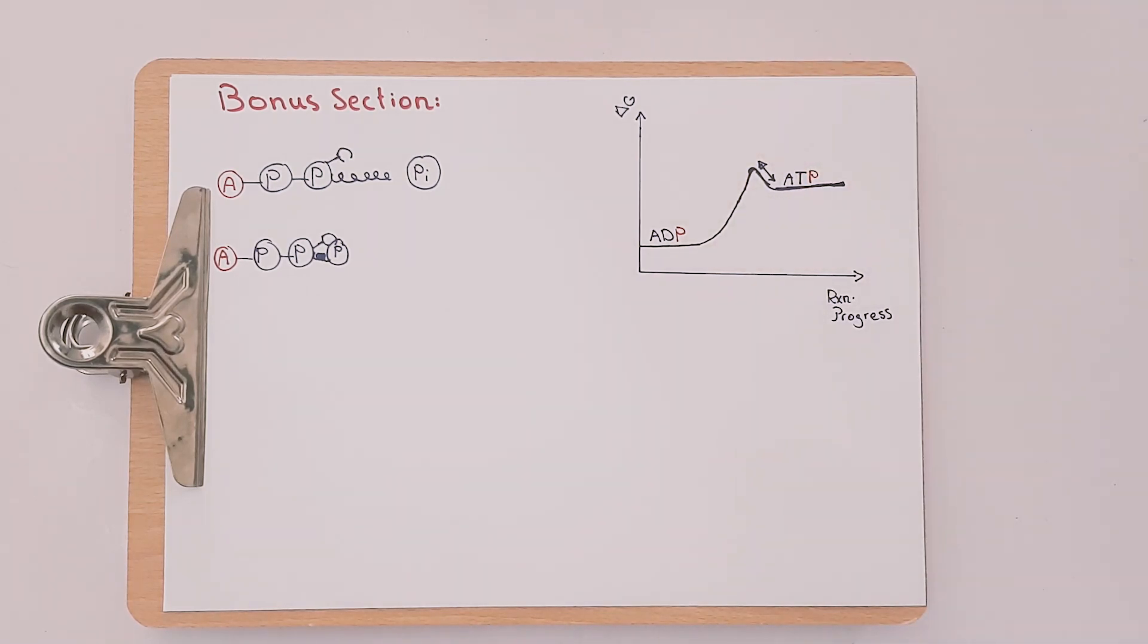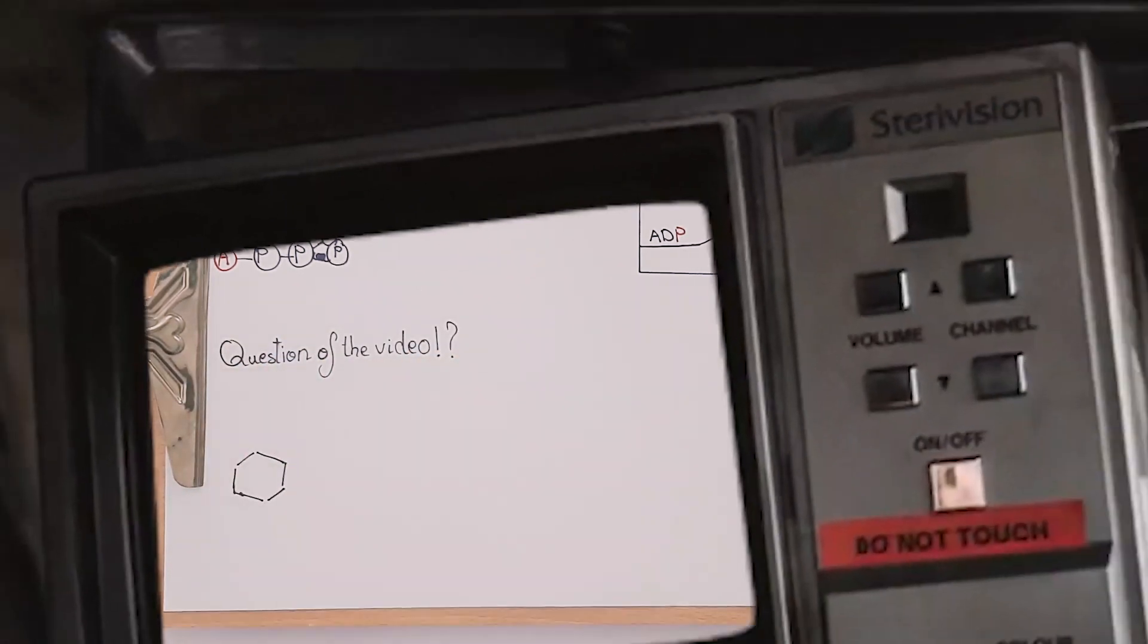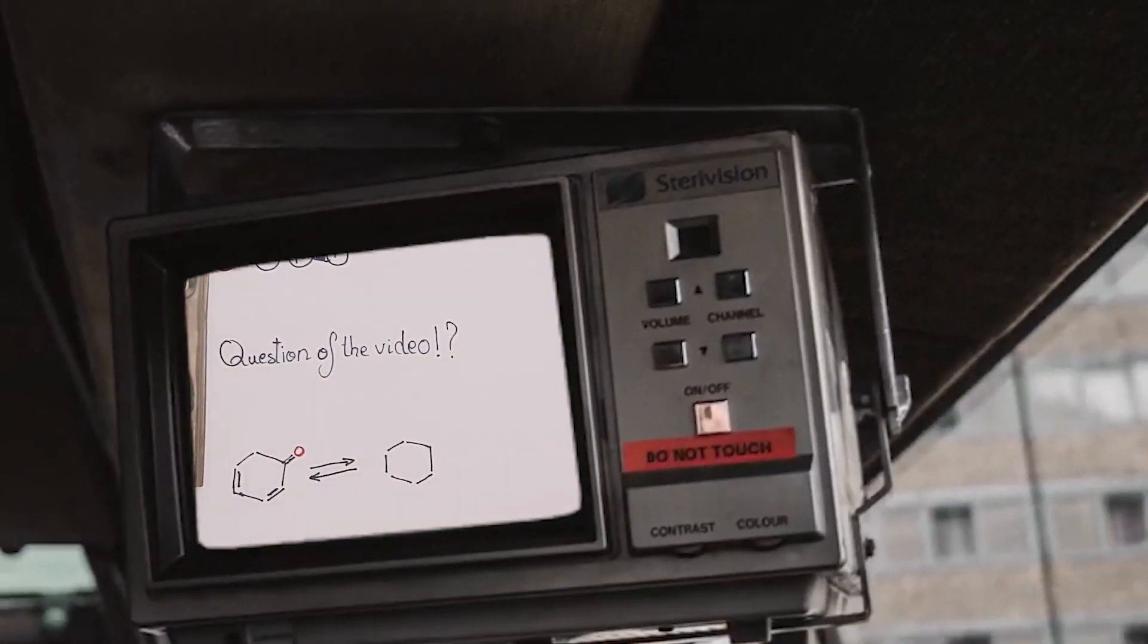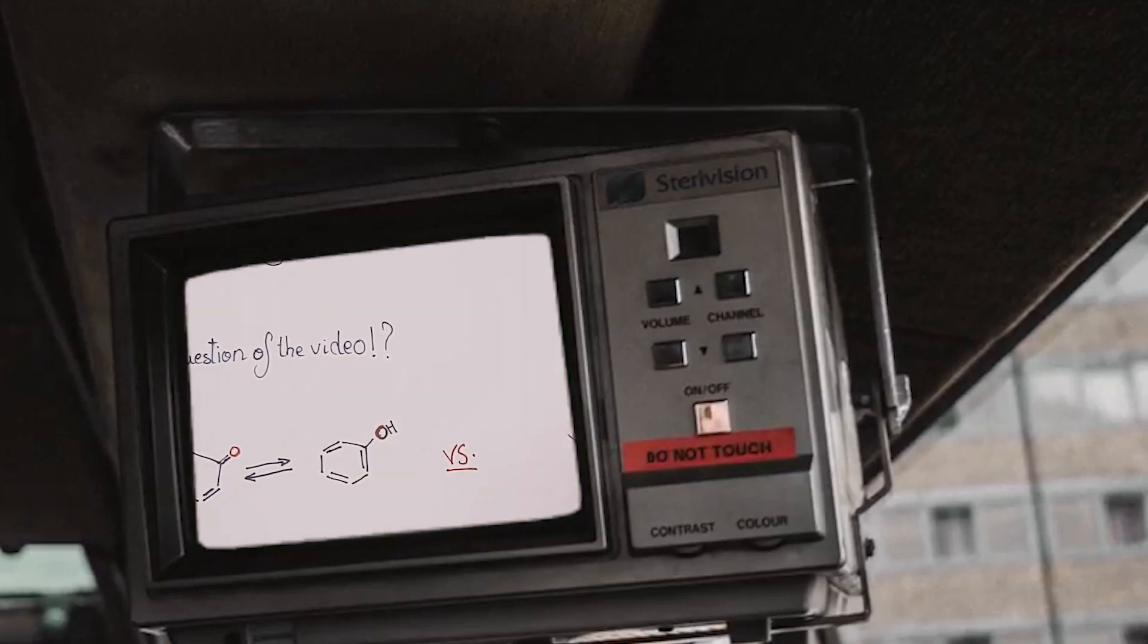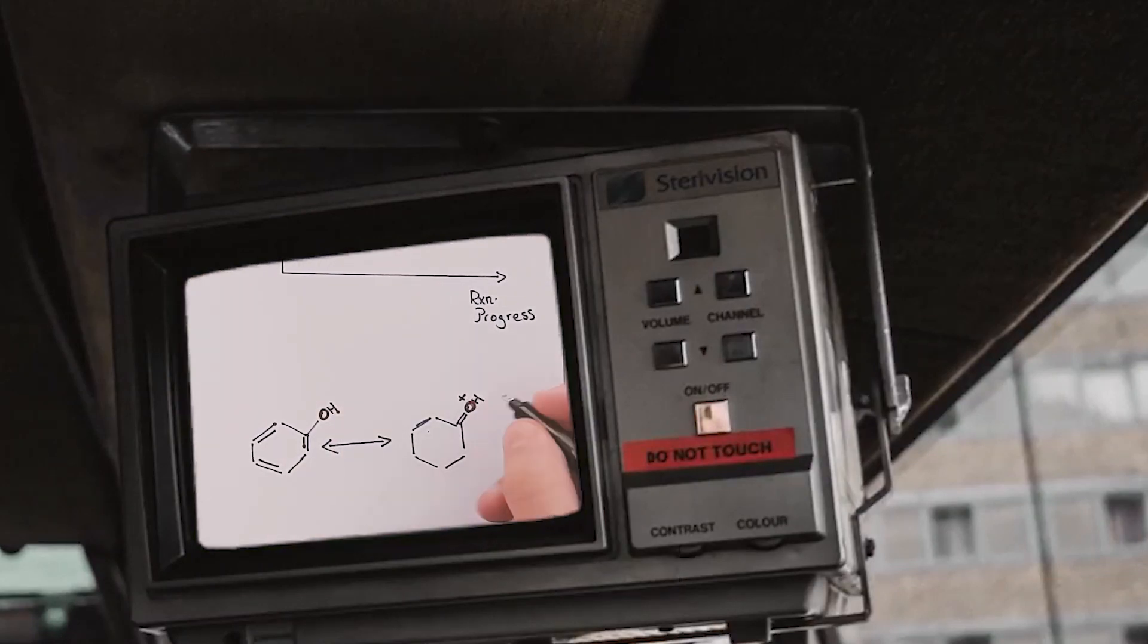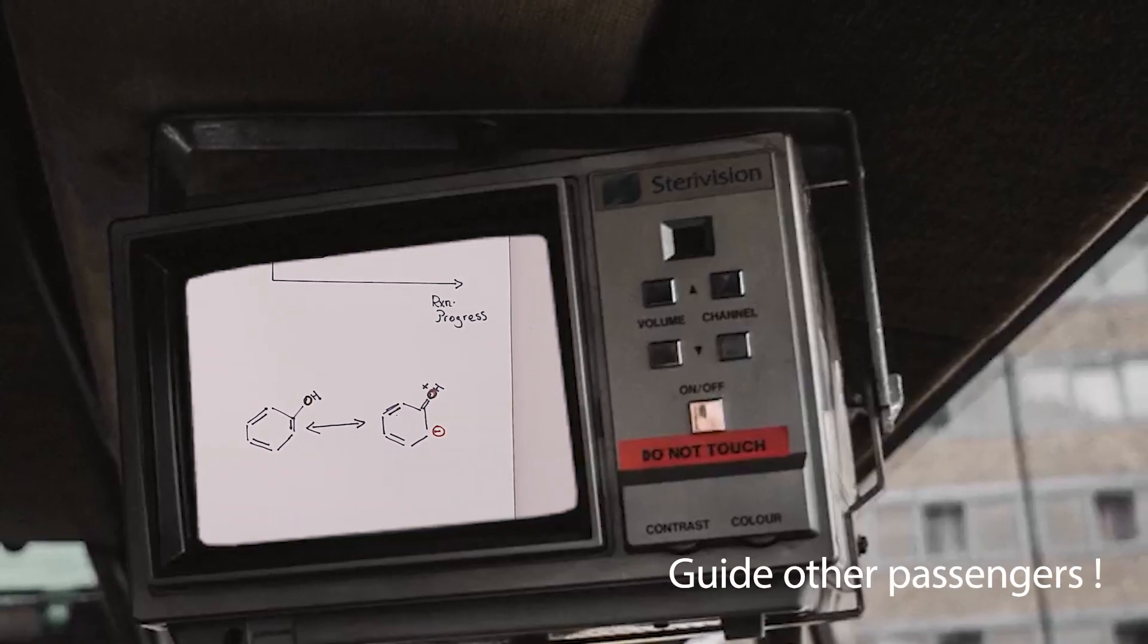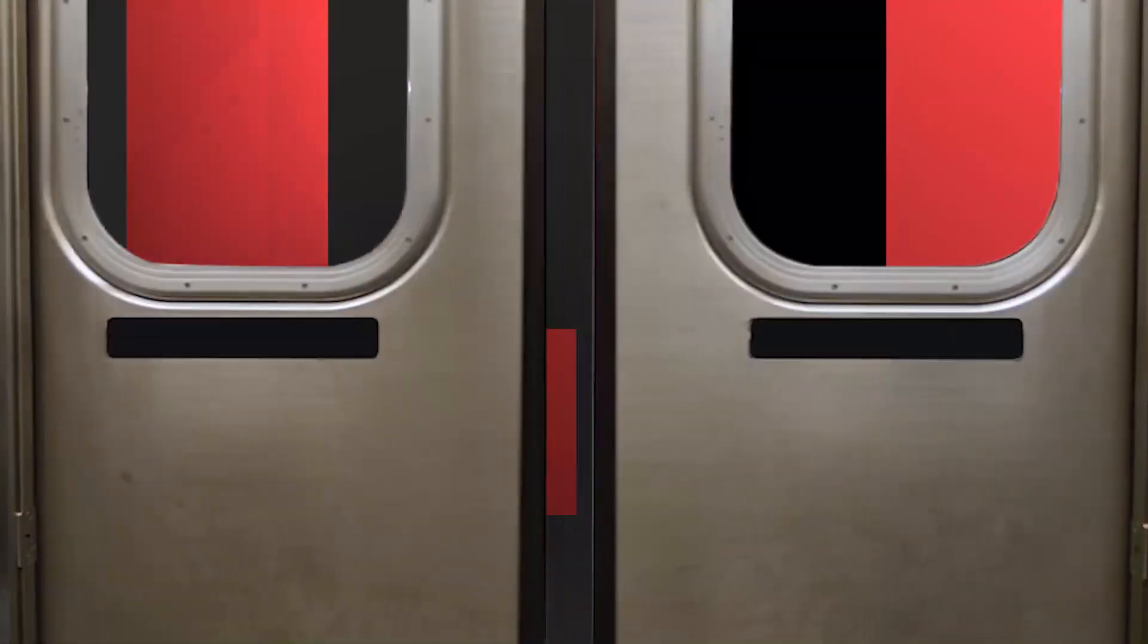Now it's time to have the question of the video. Can you tell the difference between the keto-enol tautomerism and the phenyl resonance? We are waiting for your answers in the comments below. So I am Radwan Durbala and you cramped on the road.